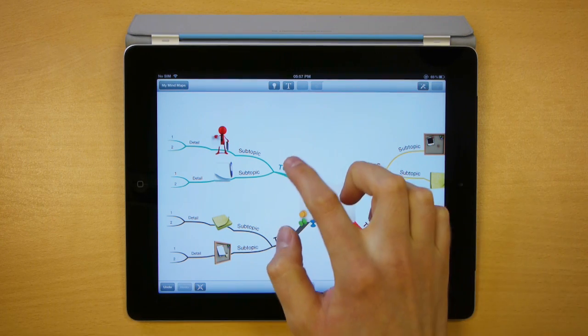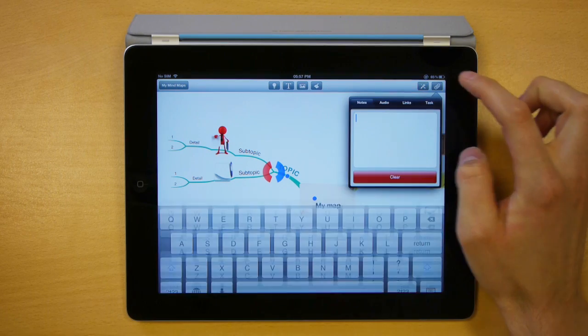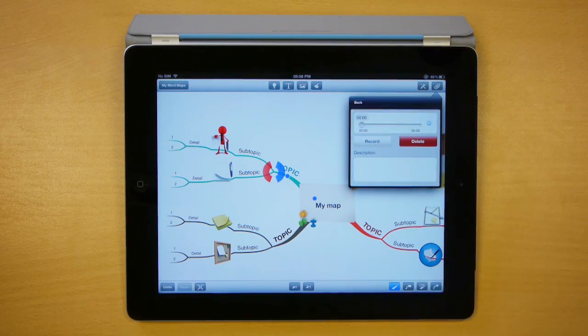When you'd like to add an audio note, select the branch you'd like to add it to, select the attachments button in the top right hand corner, select audio and then new audio note.